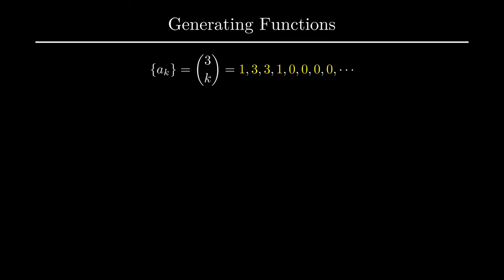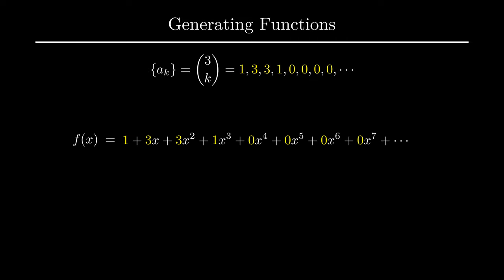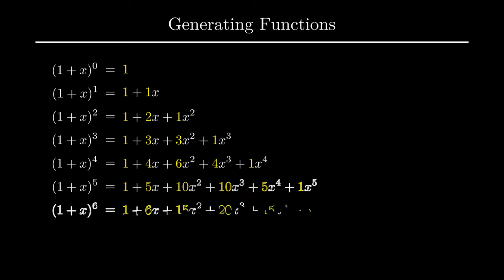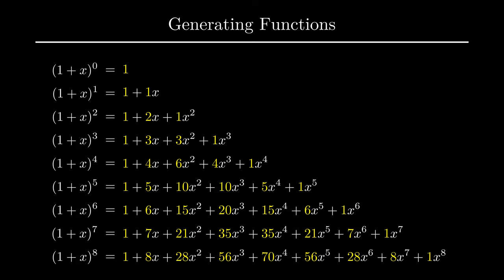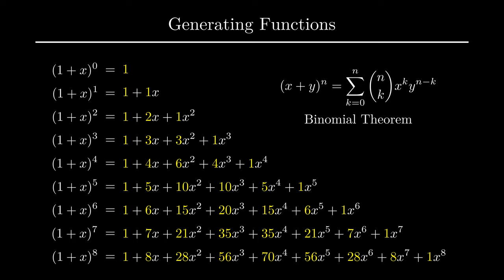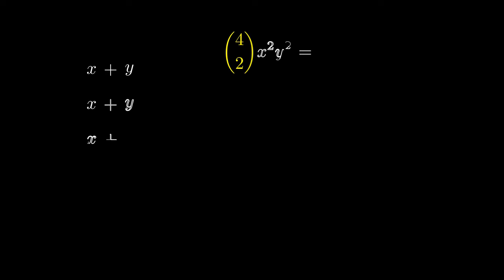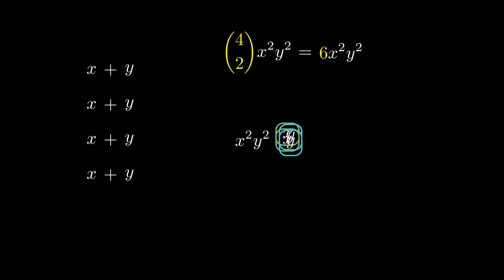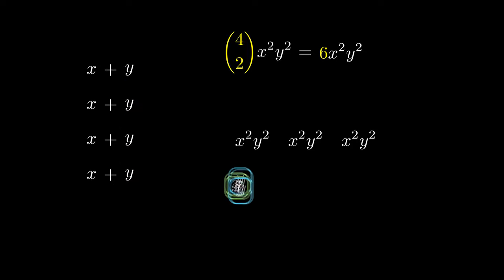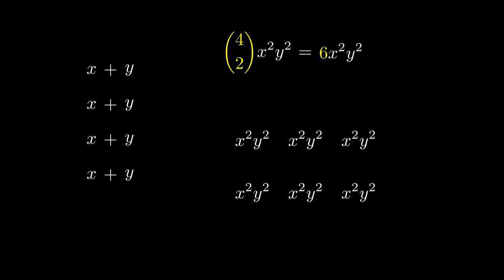Here is an example using the sequence 3 choose k. The sequence goes 1, 3, 3, 1 followed by an infinite number of zeros, giving us this generating function. It turns out that this generating function can be factored, and that exponent of 3 is not a coincidence — if we change the 3 to any other positive integer, the exponent changes accordingly. This is simply the binomial theorem. To prove it, let's look at how terms are distributed: to obtain a term, choose either x or y in each factor and multiply them together. The coefficient of x squared y squared in (x+y) to the fourth is 4 choose 2, because out of four factors, there are 4 choose 2 ways to select two of them to be x and the other two automatically being y.